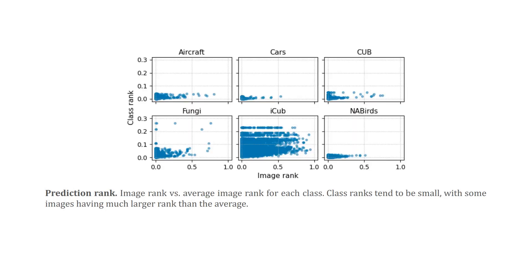Next, we show some prediction rank results. By plotting image rank against the class averaged rank, we find that there are some images that are quite far from being predicted correctly. The classifier assigns many incorrect classes higher probability than the true class, while most samples in the class have a much lower rank.